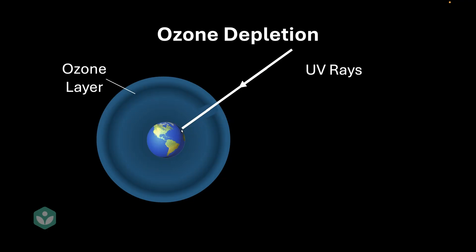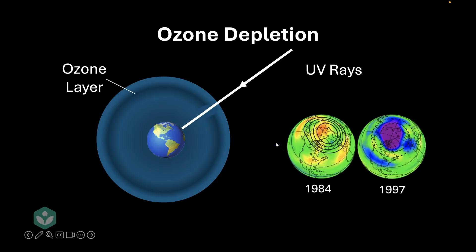Let me show you a diagram of what this looks like. This is the earth's atmosphere in 1984, and this is the earth's atmosphere in 1997. You'll notice there's a huge hole in the ozone layer in 1997, along with significant ozone layer depletion in other areas.